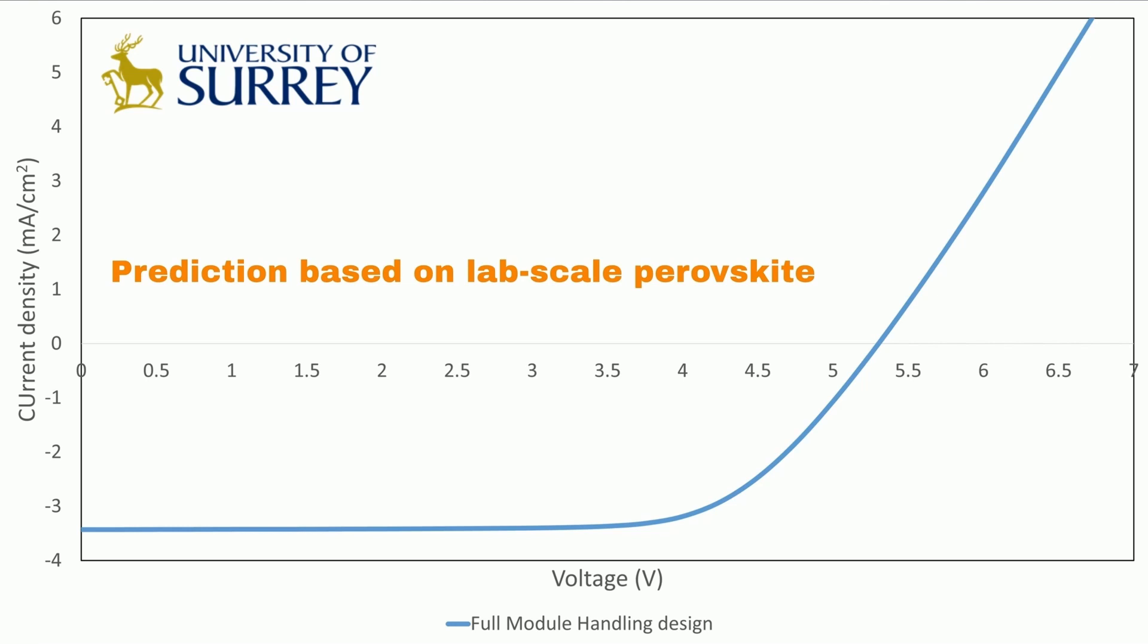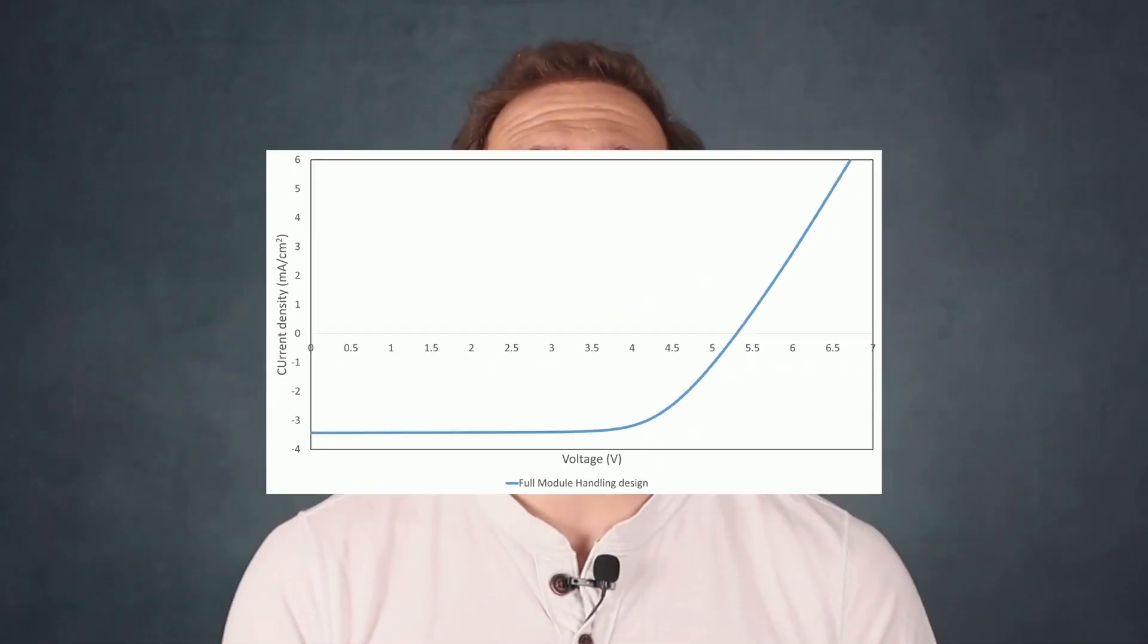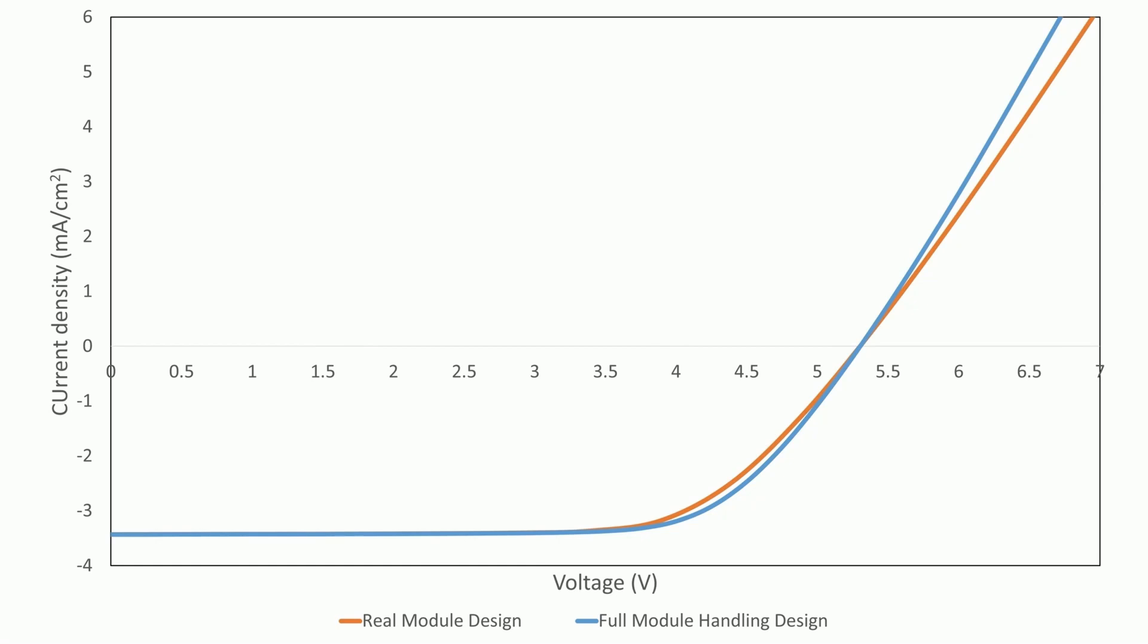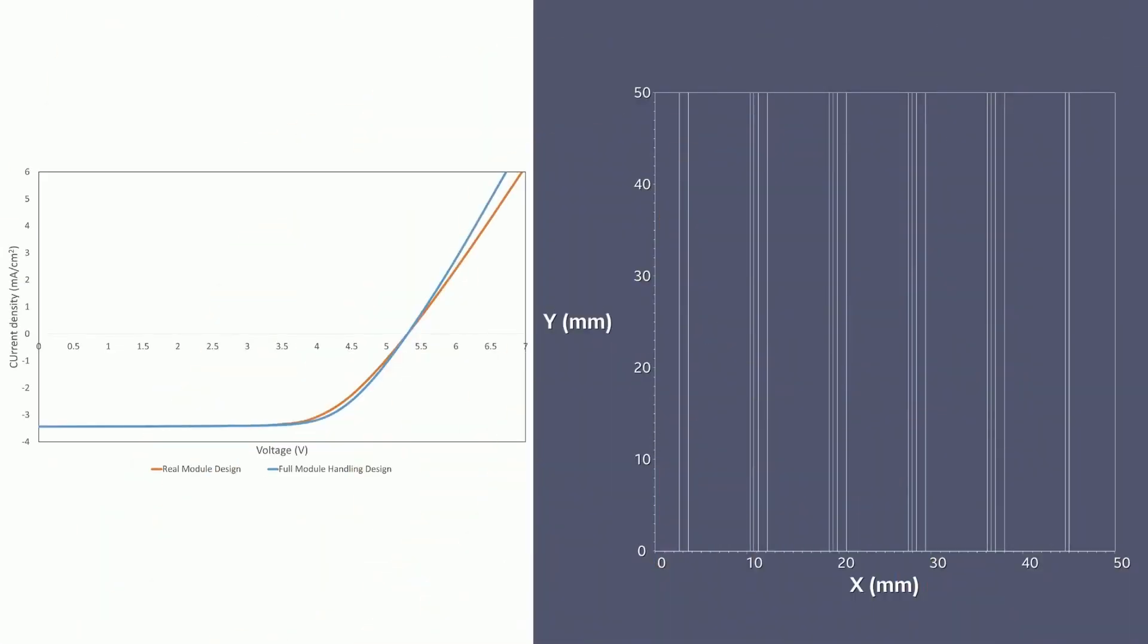We can perform the same prediction using the actual module design for which we can define the width and sheet resistance of each individual scribe line. There's a good agreement between the currents of the two simulations, so the full module handling provides a reasonable approximation of the real module design.